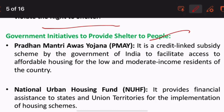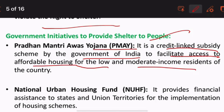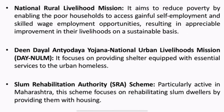Government initiatives to provide shelter to people: Pradhan Mantri Awas Yojana is a credit-linked subsidy scheme by the Government of India to facilitate access to affordable housing for low and moderate income residents. The National Urban Housing Fund provides financial assistance to states and union territories for the implementation of housing schemes.